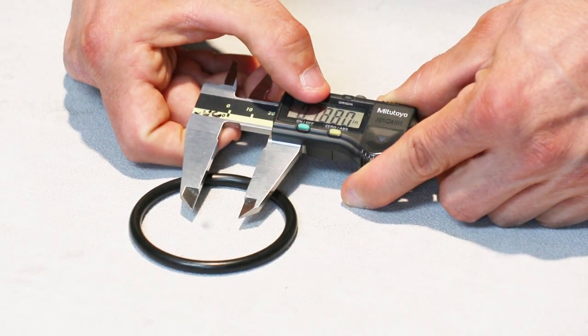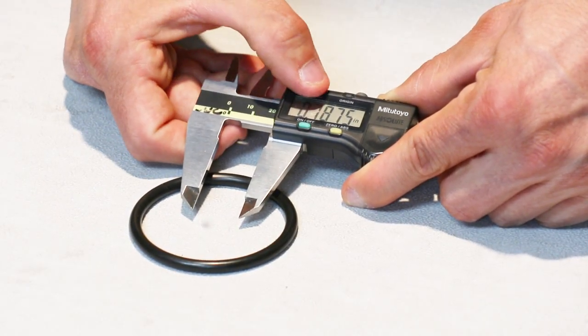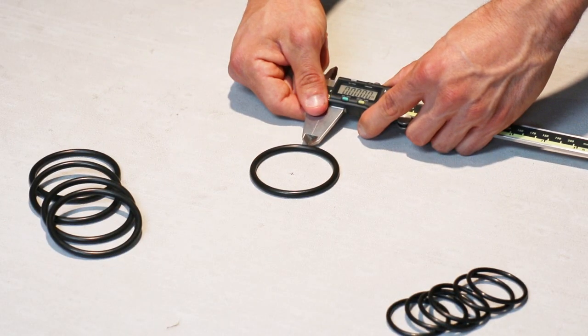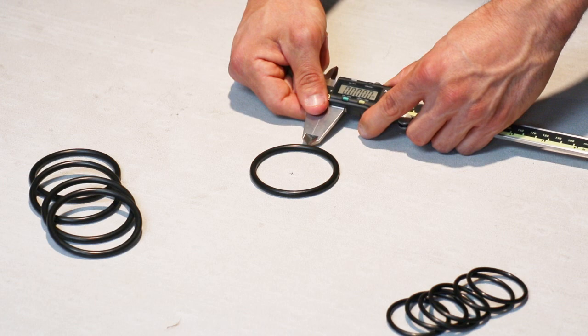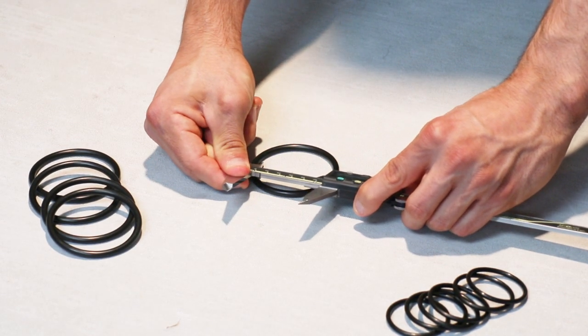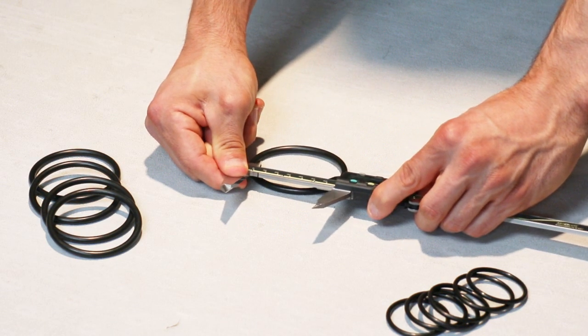Calipers can measure both AS568 and metric size o-rings. To measure the OD and ID, it is recommended to lay it on a flat surface. To ensure you get an accurate reading, do not clamp onto the o-ring, making sure not to stretch or compress it. Measure the ID of the o-ring by placing the smaller jaws on the inside. Do not stretch the o-ring like this.